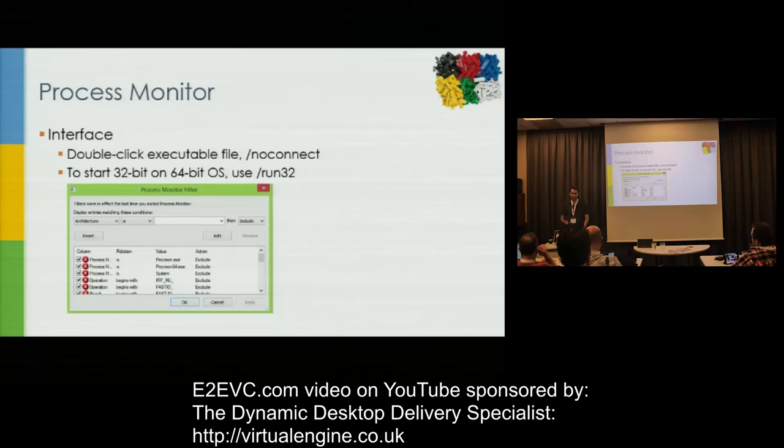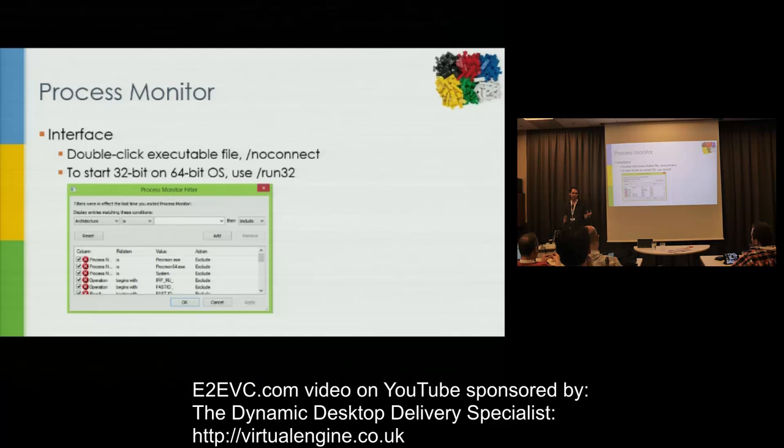I believe they have a UNC path you can map up and basically just run it off the internet — the cloud. You can run it from there. I just have a local copy running all the time, and whenever somebody sends me a ProcMon log from a newer version and tells you to update, then I update. Unless you find a bug — but Mark Russinovich never has bugs, so we're good.